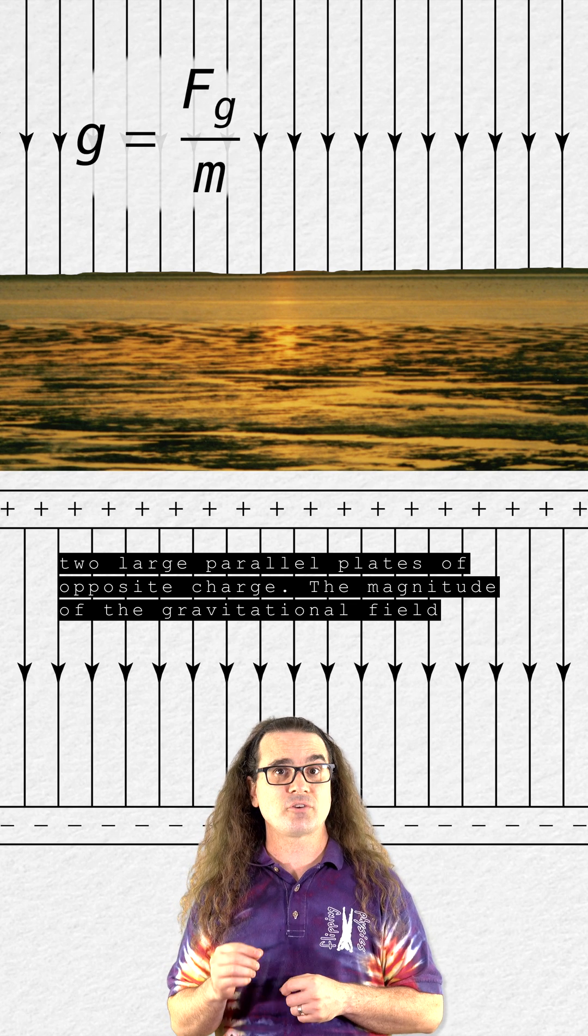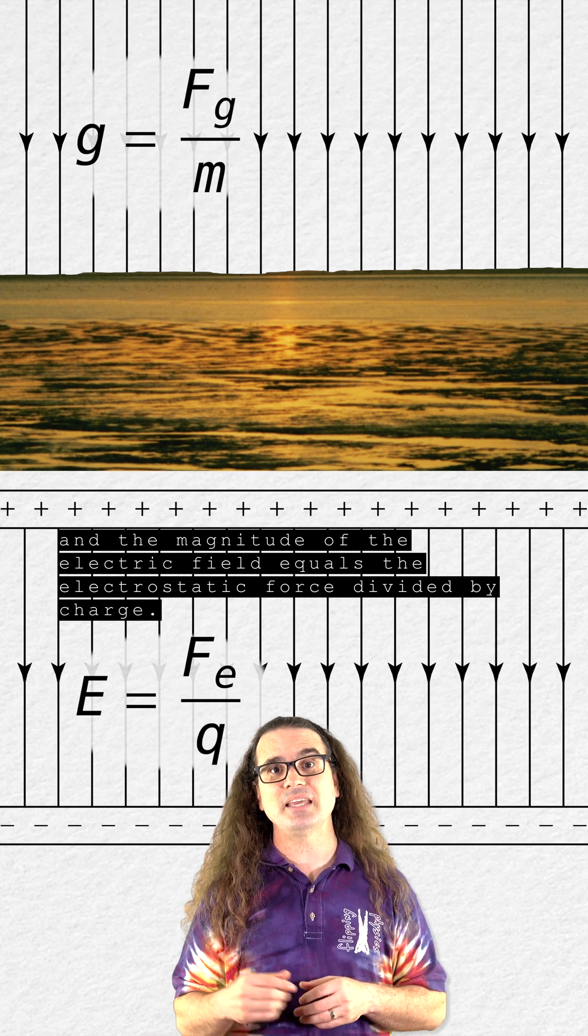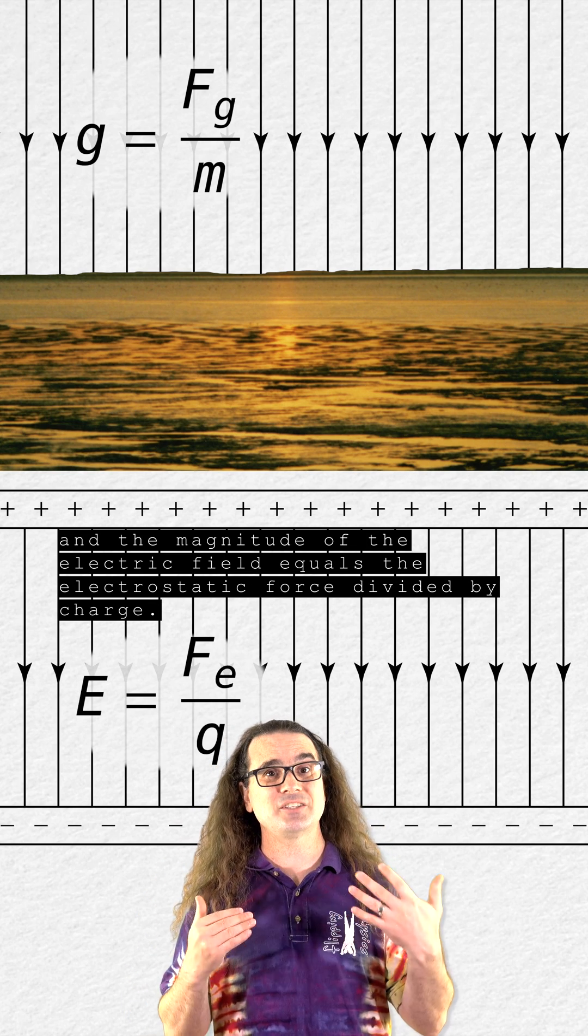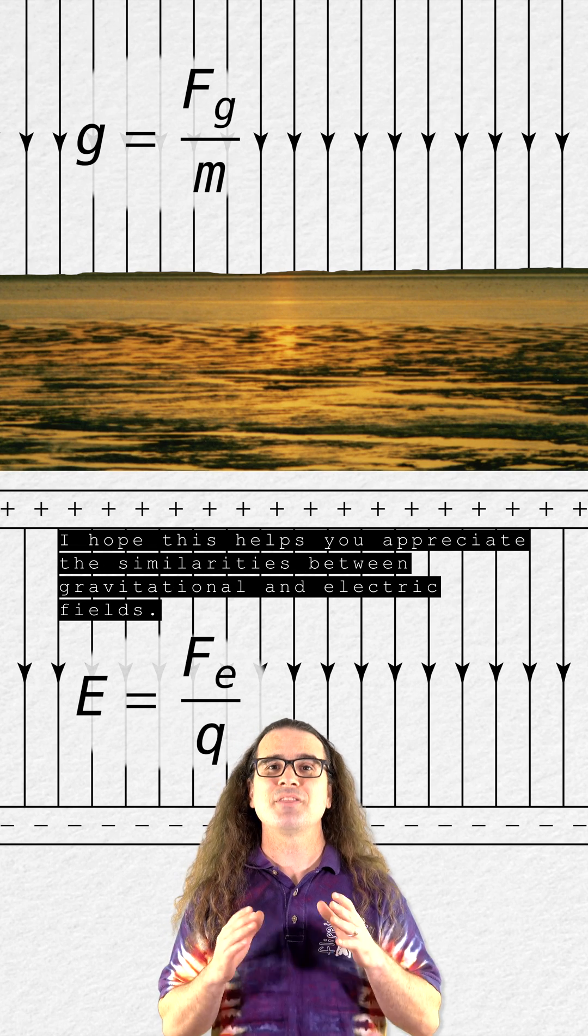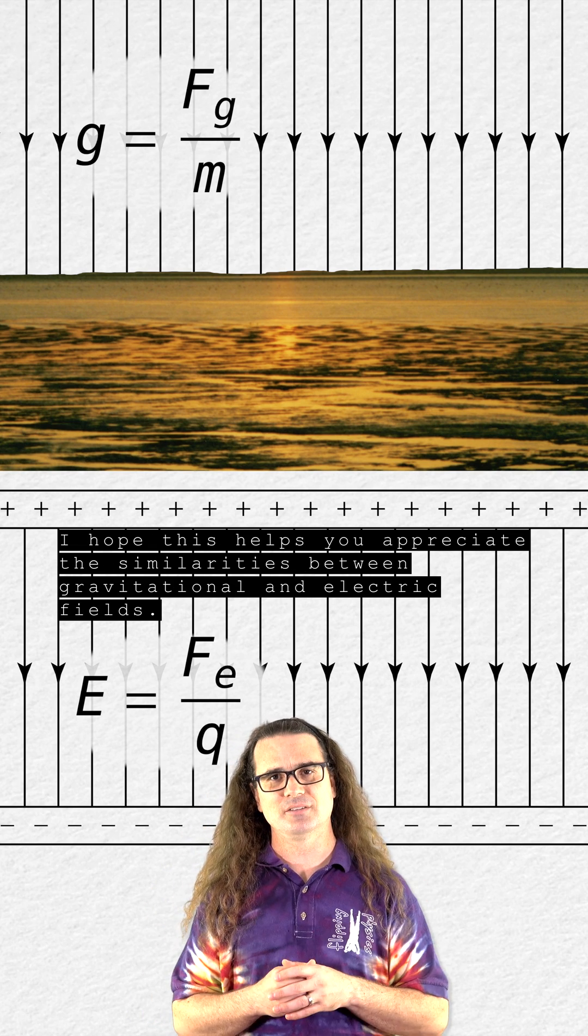The magnitude of the gravitational field equals the force of gravity divided by mass, and the magnitude of the electric field equals the electrostatic force divided by charge. I hope this helps you appreciate the similarities between gravitational and electric fields.